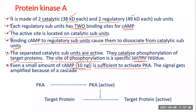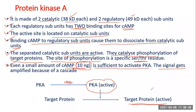10 nanograms is an extremely small amount — one milligram is a thousand micrograms and one microgram is a thousand nanograms. The signal gets amplified because of a cascade: PKA, which is inactive, in the presence of cyclic AMP becomes active — meaning the two types of subunits dissociate — and it then phosphorylates the target protein at specific serine or threonine residues, not just any serine or threonine.